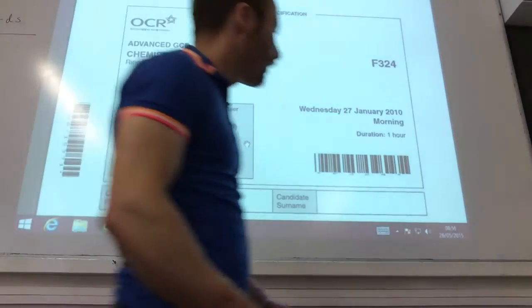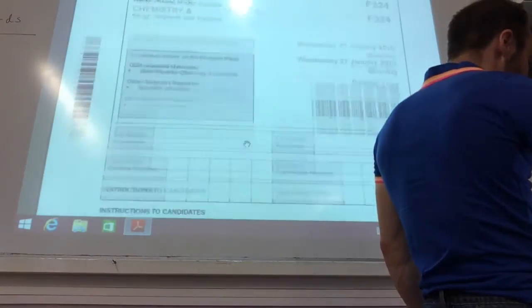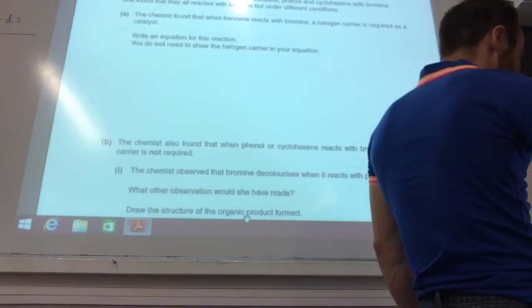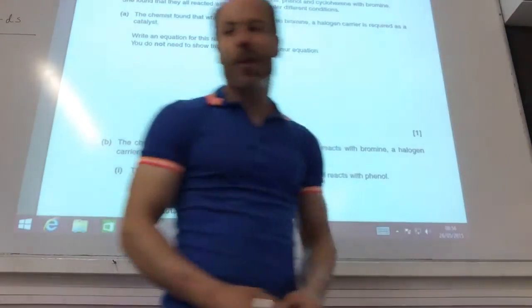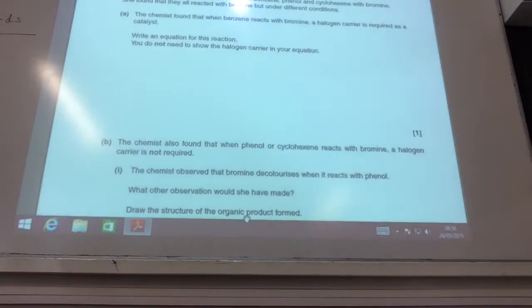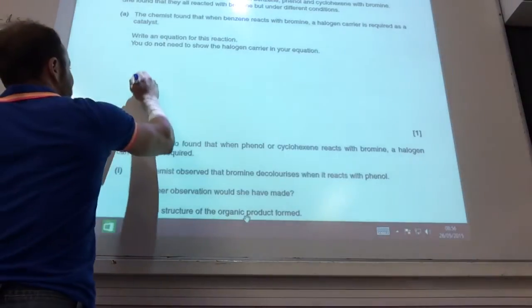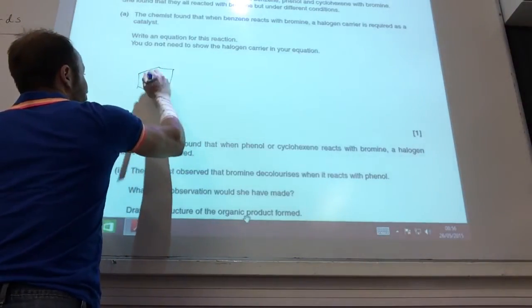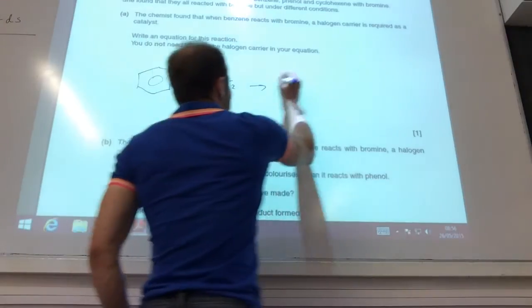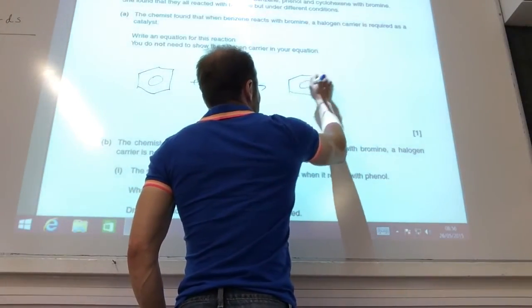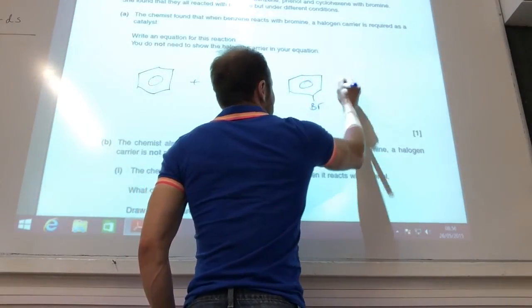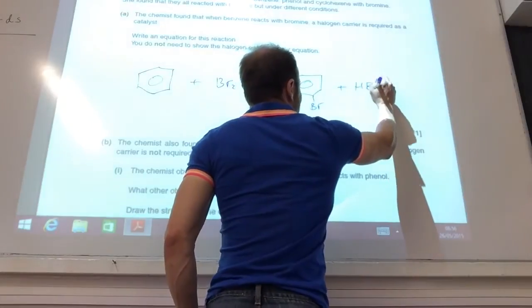Alright, so today we're going to go through January 2010 with polymers and analysis. First of all, we start off with another benzene question here. Reacting with bromine, halogen carrier required. You don't need to show the halogen carrier. So nice and easy, you've just got benzene plus Br2 gives you bromobenzene plus HBr.